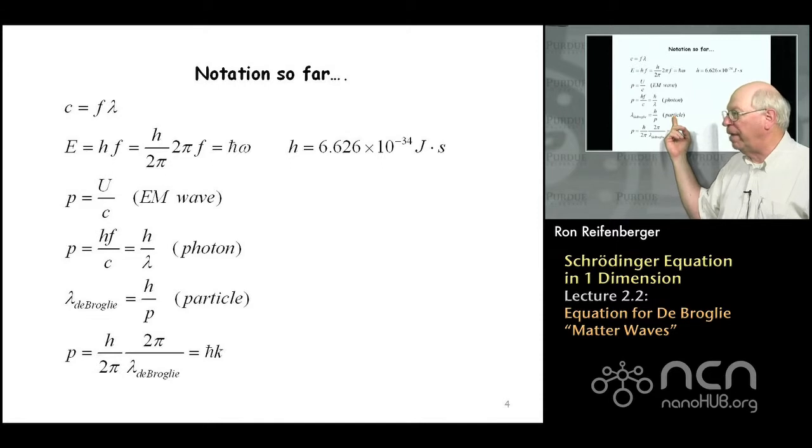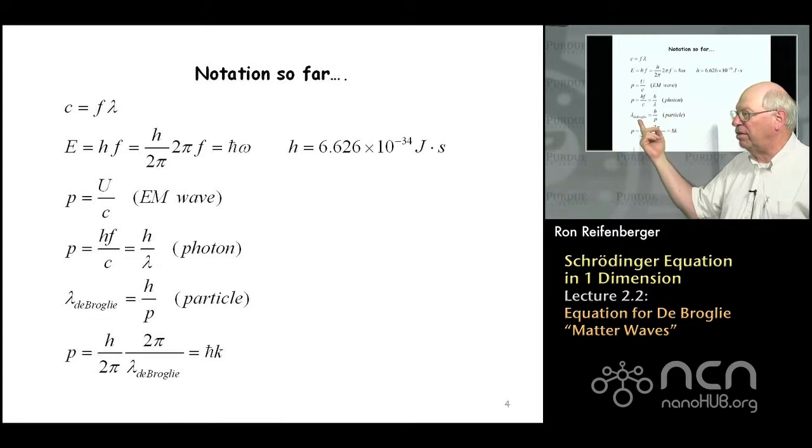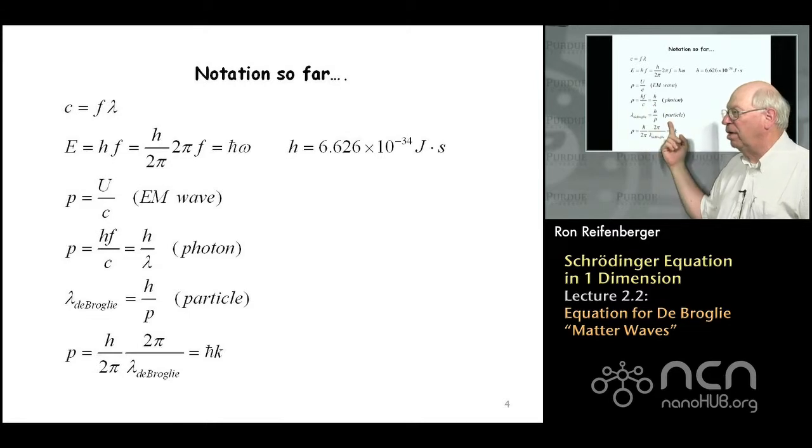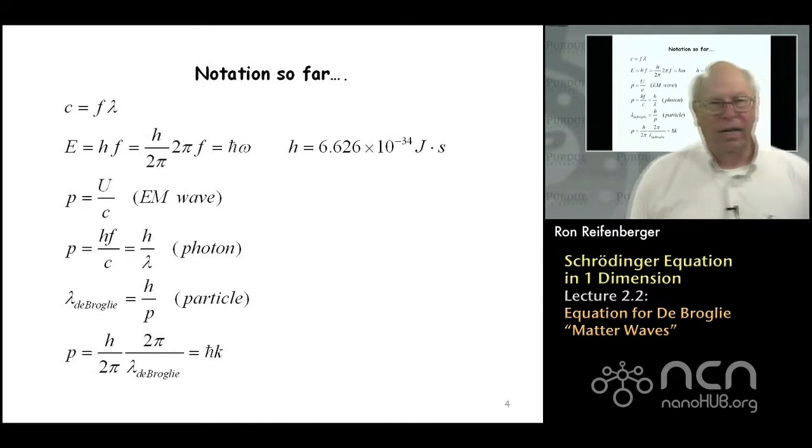We've got Maxwell's equation for the momentum of an electromagnetic wave in terms of the energy U that's contained in it and the speed of light c. We define the concept of a photon. The momentum of a photon is given by Planck's constant h divided by the wavelength of a photon.